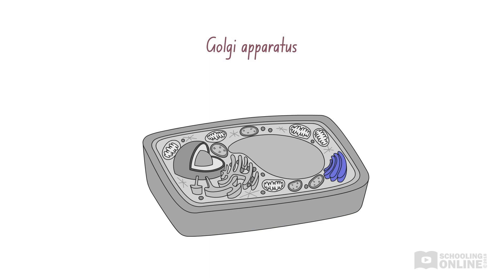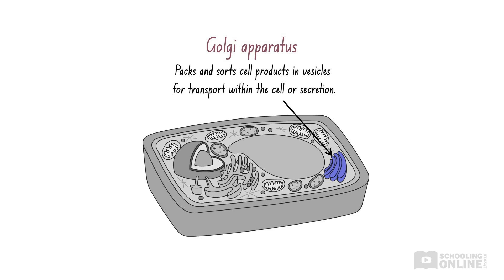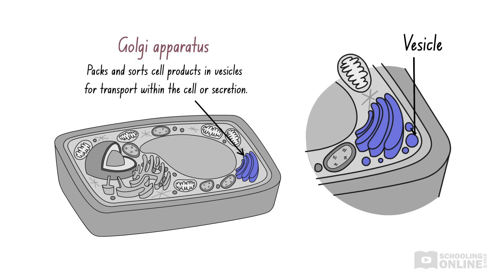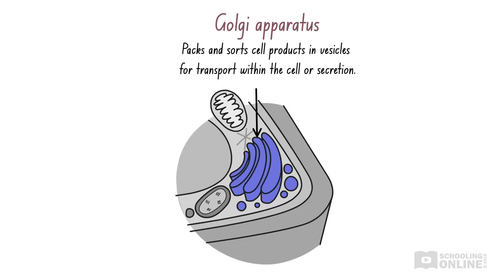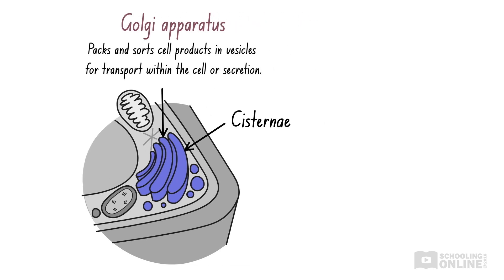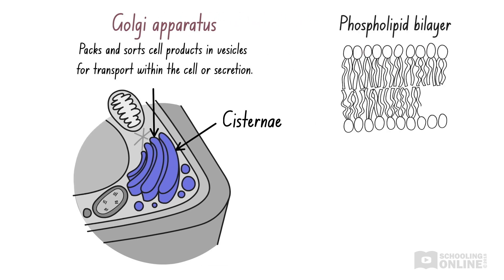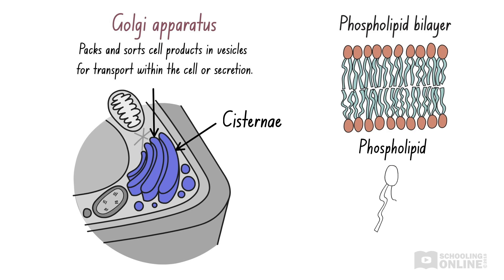The Golgi apparatus is also found in plant cells. It is an organelle that packs and sorts cell products, such as lipids and proteins, so they can be transported within the cell or secreted out of the cell. Each cell product is packaged in a vesicle, which is a small sac enclosed by a membrane. Like the endoplasmic reticulum, the Golgi apparatus forms a network of flattened membranes, or cisternae; however, they are not connected and lack ribosomes. The cisternae are composed of one phospholipid bilayer, consisting of two layers of phospholipid molecules with a phosphate head and a fatty acid tail.